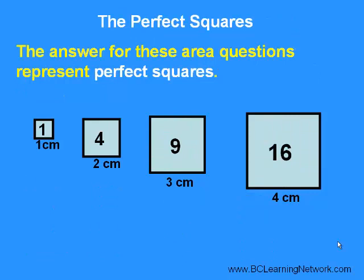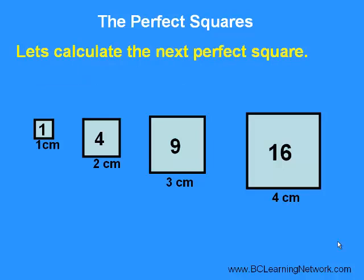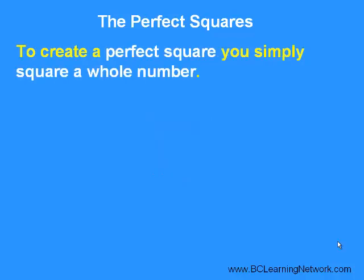The answers for these area questions—1, 4, 9, and 16—represent perfect square numbers. What would be the next perfect square to come after 16? To create a perfect square, you simply square a whole number.